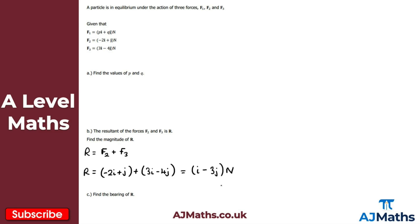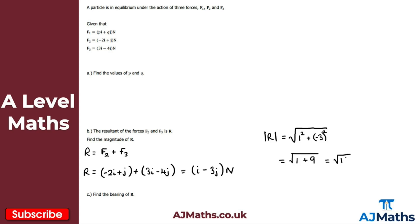We're not done — we want the magnitude of R. Applying Pythagoras: the magnitude of R is the square root of 1 squared plus minus 3 squared, which is the square root of 1 plus 9, giving the square root of 10 newtons. That's the magnitude of R and our solution to part B.